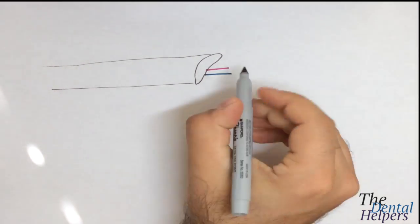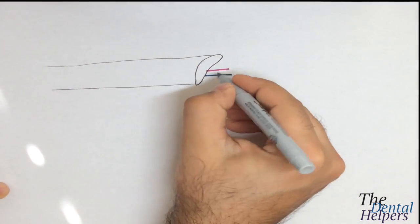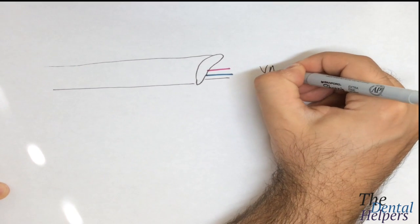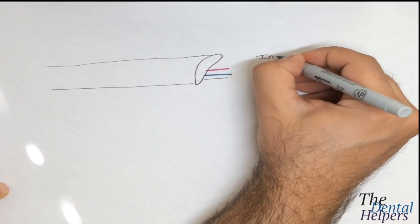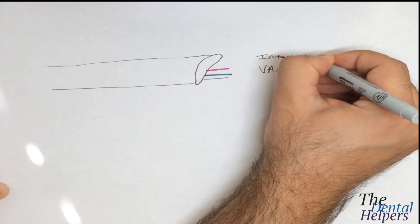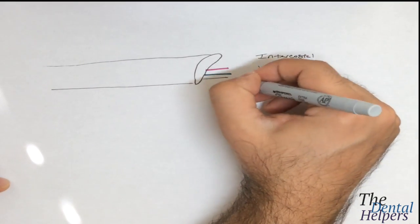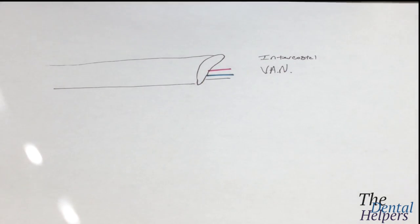All three of these—the intercostal VAN, meaning vein, artery, nerve—are in line with each other, following along the same path. That's an advantage we have in some parts of the body where they're all together.